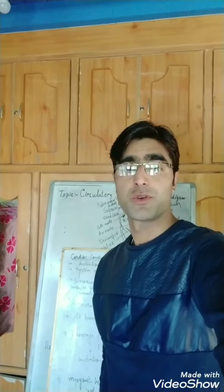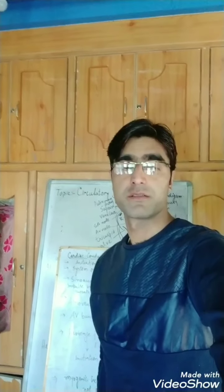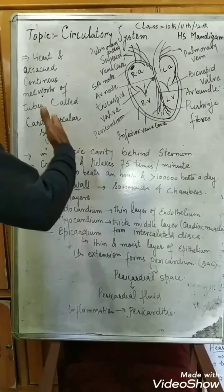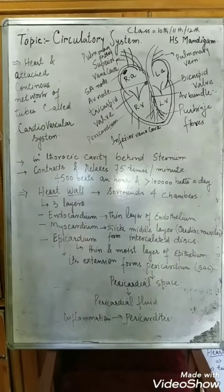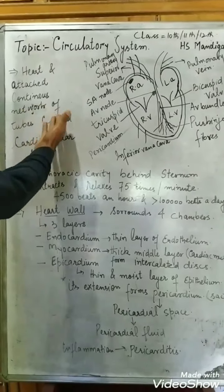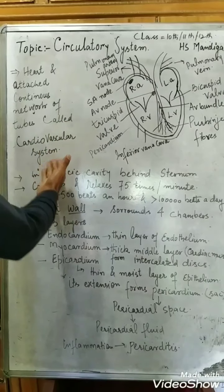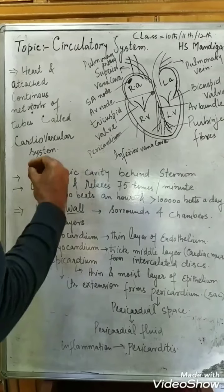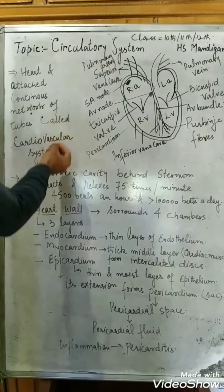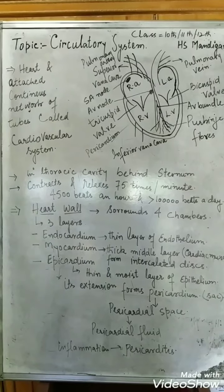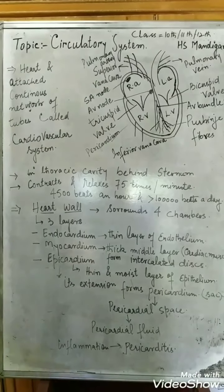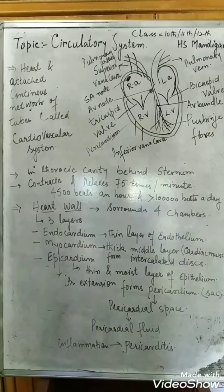Today let me teach you about an important topic: the circulatory system. The circulatory system consists of a central pump called the heart and an attached continuous network of tubes called blood vessels. This heart and the network of tubes together are called the cardiovascular system. Cardio means heart and vascular means vessels.